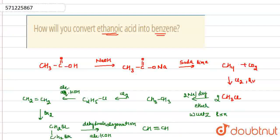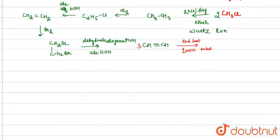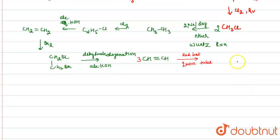Now we will take three molecules of this acetylene in the presence of red hot iron tube. These three acetylene molecules will undergo polymerization reaction to form benzene molecule.